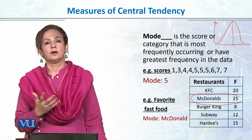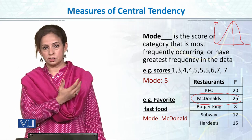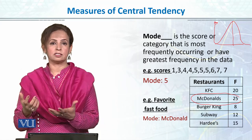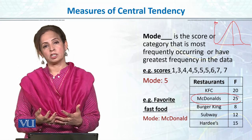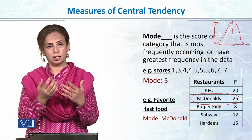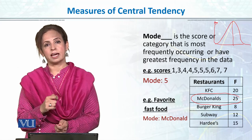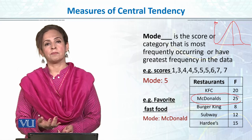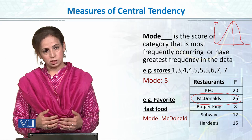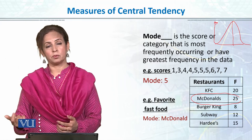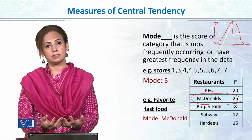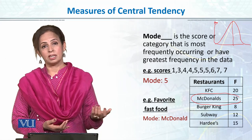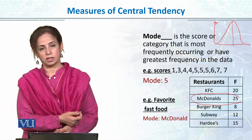Isi tarah, humare daily life mein bohot se examples hain jahan pe mode ki zaroorat hoti hai. For example, agar ek designer hai jo shoes banata hai — kaisa woh order karega, ki kitne pairs kis number ke banaye jayein. Mode actually gives them information: since majority of women ke shoe size seven ya eight hoga, woh zyada seven or eight numbers ke shoes order karega, aur kam chhote ya bade numbers ke. Isi tarah dress designing mein, aapka medium size zyada hoga as compared to extra large or extra small.